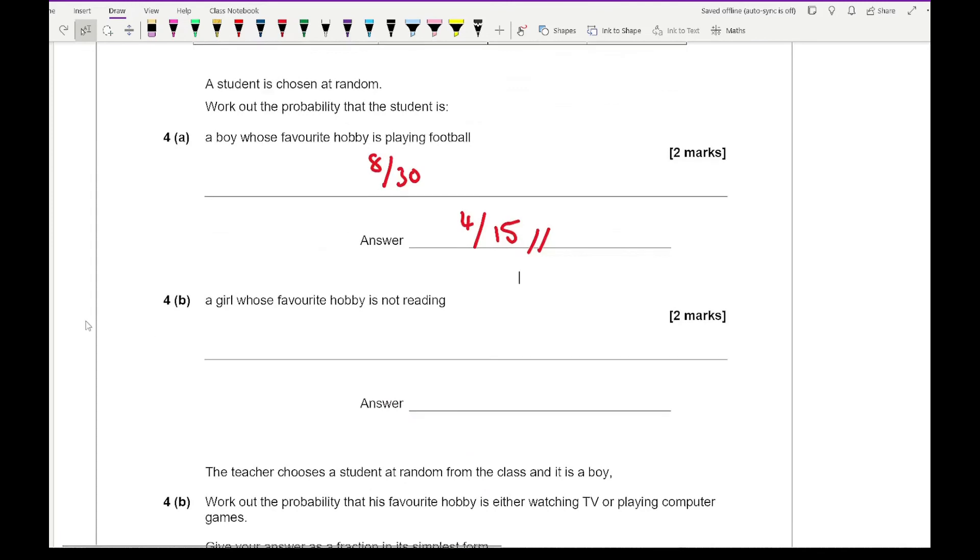For 4B it says a girl whose favourite hobby is not reading. Well not reading is going to be 12 because there are take away 1. So there's 1 girl who likes reading and 12 in total so that's 11. So the answer is 11 over 30.